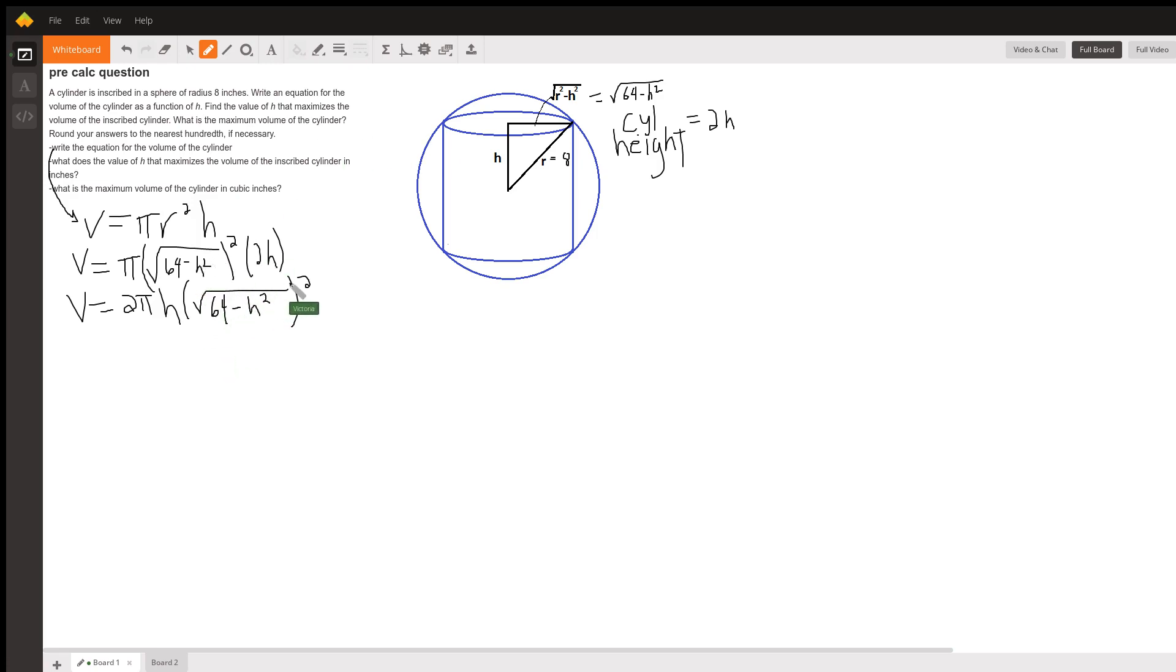When you square a square root—see this is a square root and this is a square—they undo each other. And so what you have is 2 pi h times 64 minus h squared.